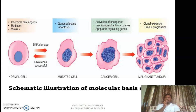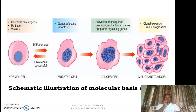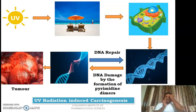The summary of this slide is: whenever a normal cell is exposed to any carcinogen, it results in DNA damage. If the individual does not have the ability to repair that DNA damage, it will undergo mutation. If that mutation happens in oncogenes, anti-oncogenes, and apoptosis regulatory genes, it results in the development of cancer, which ultimately turns into a malignant or benign tumor based on its characteristics.